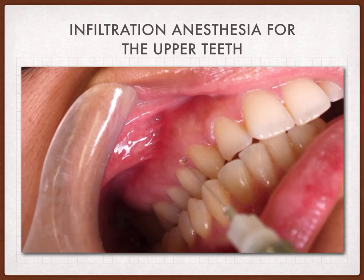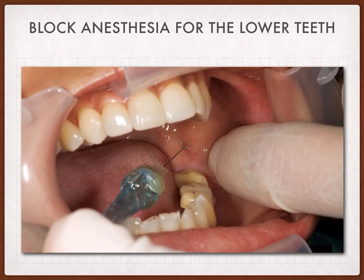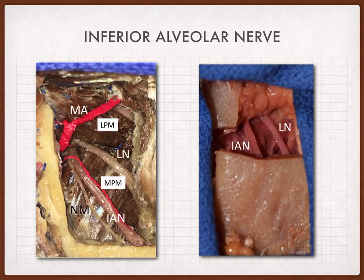After all of this, the next step is anesthesia. For upper teeth we do infiltration, and for lower posterior teeth we do a block for the inferior alveolar nerve. For lower anterior teeth we might do infiltration. The inferior alveolar nerve (IAN) can be seen in the picture, and the lingual nerve (LN) is medial to it.